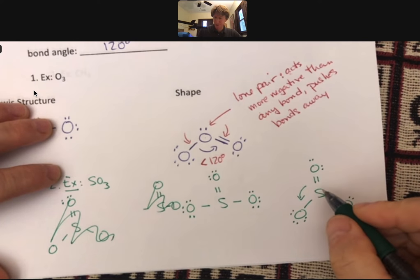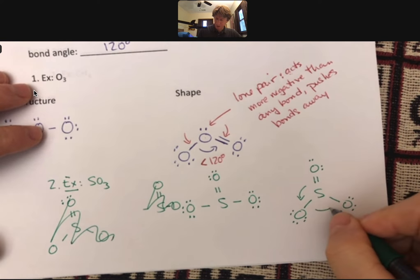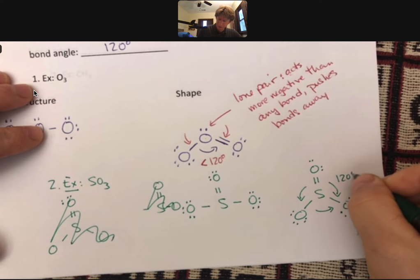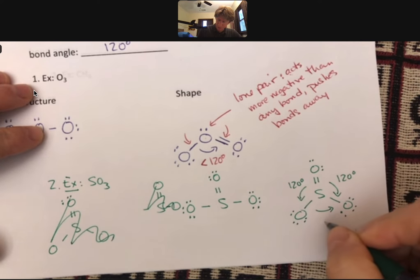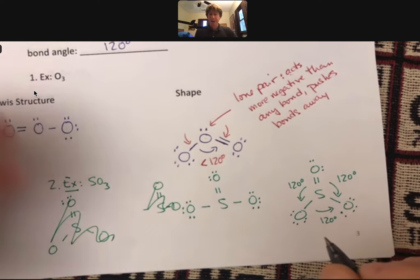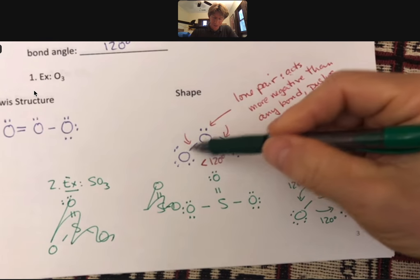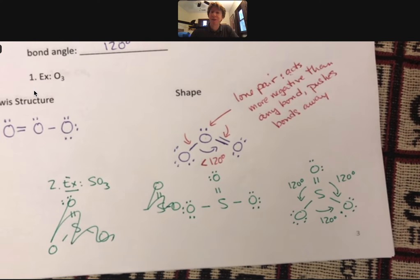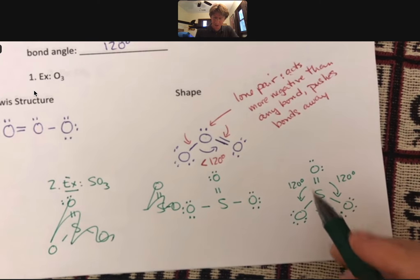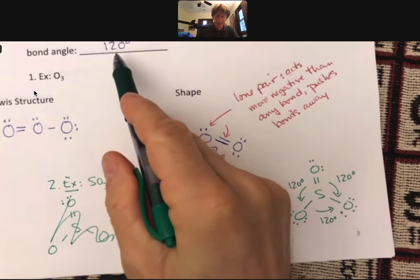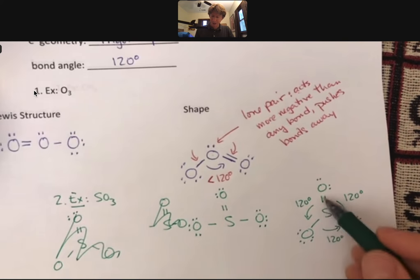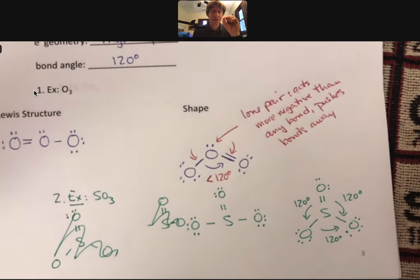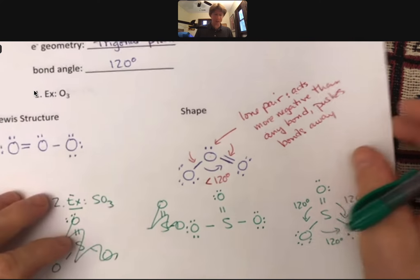Now when there's no electron pairs, when there's all atoms, all of these bond angles are a perfect 120 degrees. And sometimes you'll see for ozone here, with a pair of electrons, they actually give you a number. However, I will not ask you to know the number. All I will ask you to know is that when there's a pair of electrons, it's less than the ideal bond angle. When it's all atoms, it's perfectly that bond angle, 120 degrees.